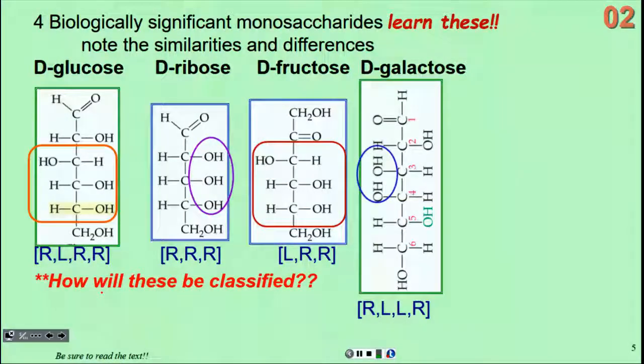There are four specific biologically significant monosaccharides that you simply will want to memorize. Those are glucose, ribose, fructose, and galactose. They're all shown as their D forms, what that means is going to be explained later. How we're going to classify each of these will be important.